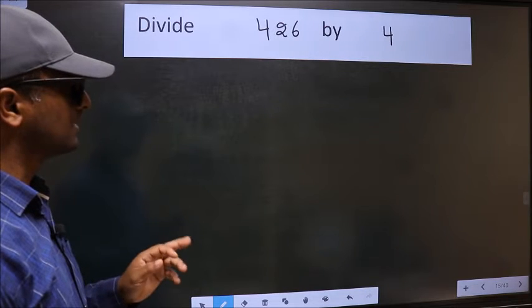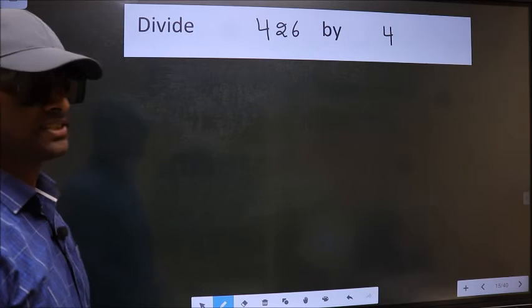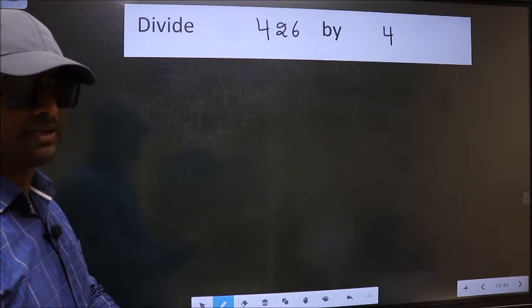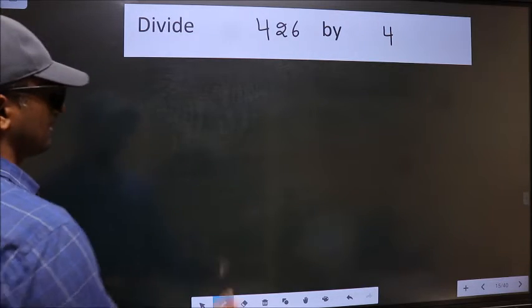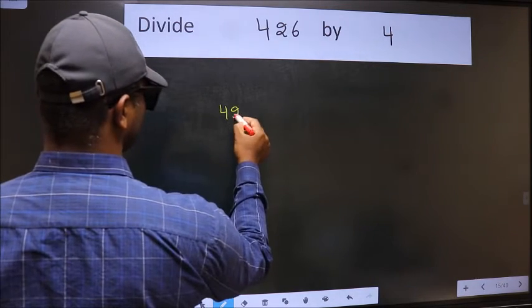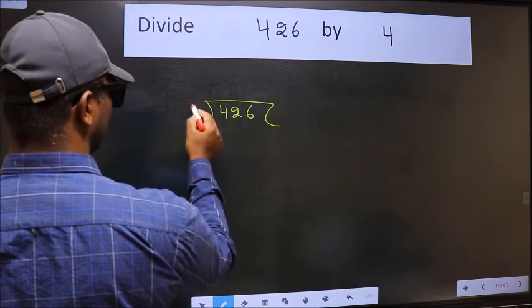Divide 426 by 4. To do this division, we should frame it in this way: 426 and 4 here.